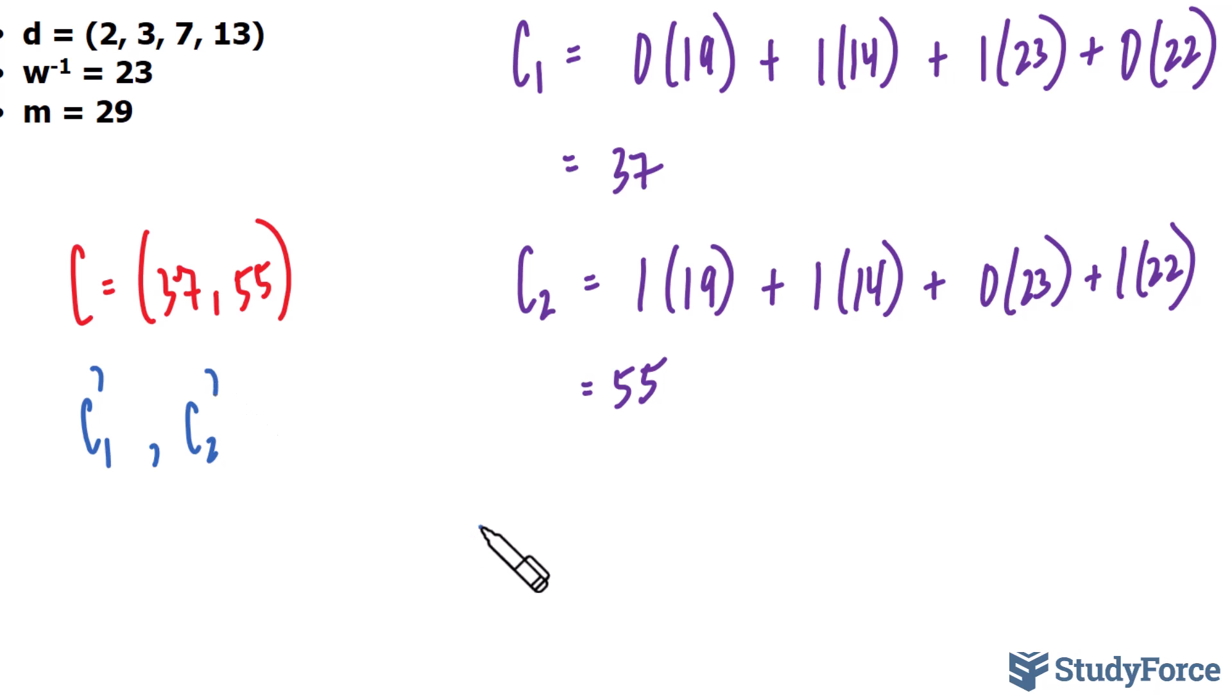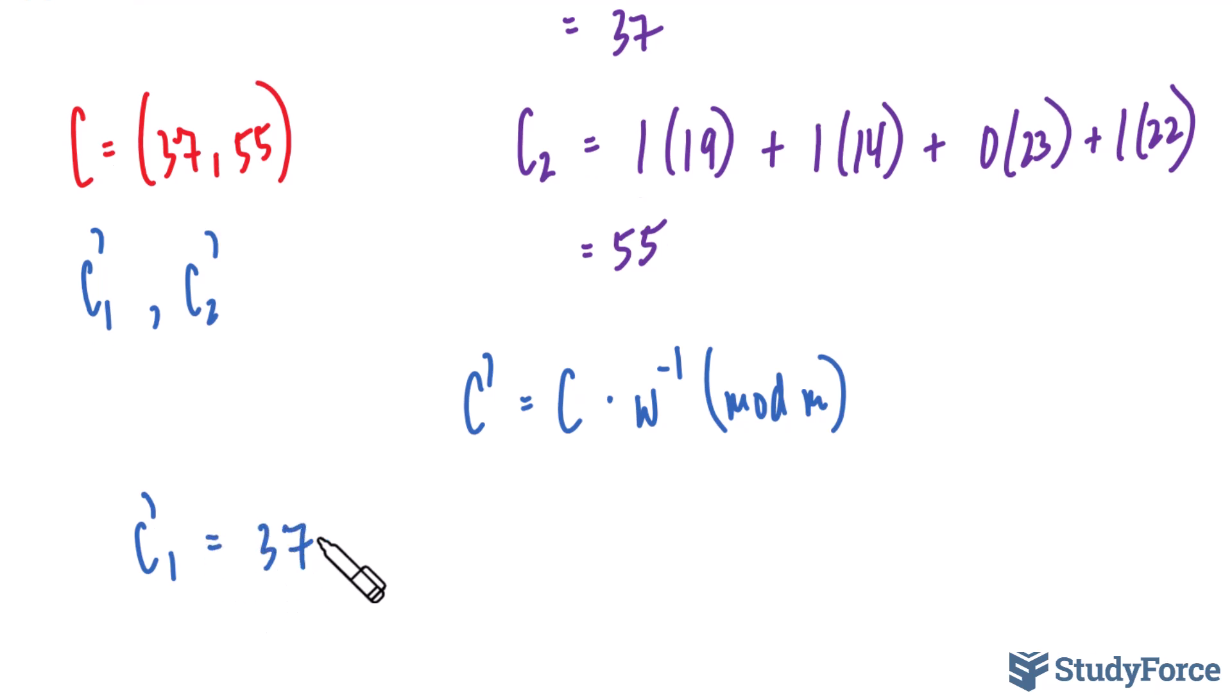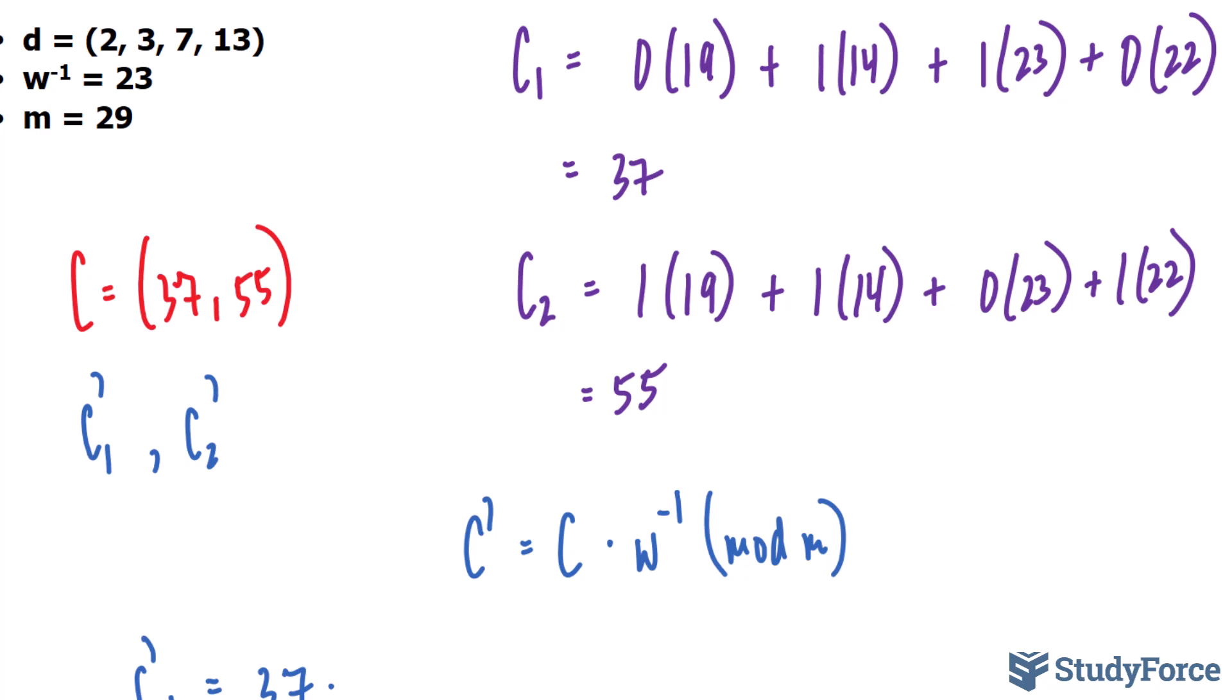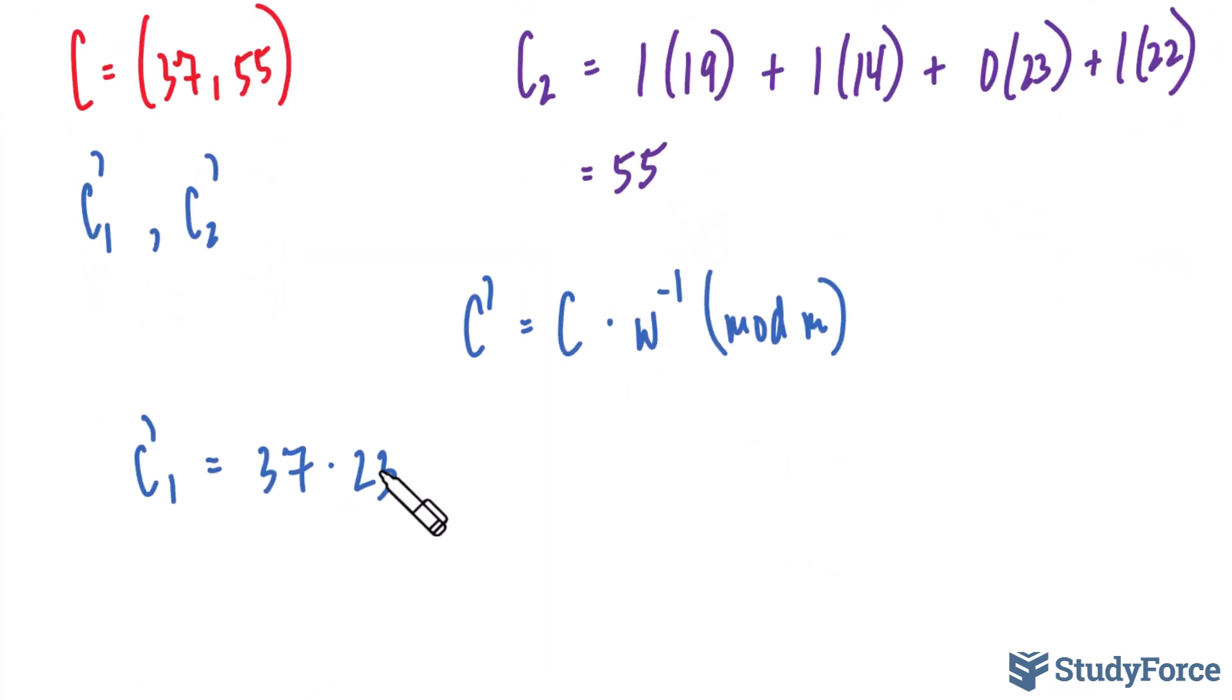And because C consists of two elements, we'll have C'1 and C'2. To find C' generally, we take the ciphertext, which I'll call C, and we multiply it to the inverse of W mod M. Remember that the inverse of W and M were part of our private key. We'll have C'1 is equal to 37 times, remember that the inverse of W is 23, mod 29, and again we repeat this for 55.